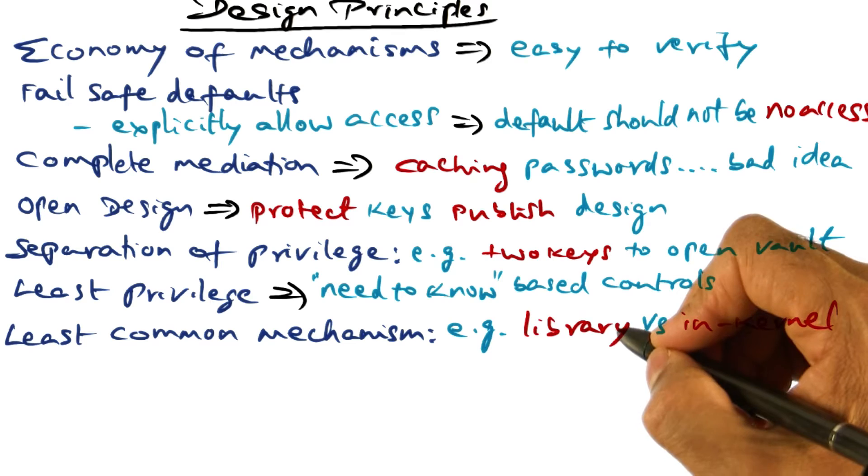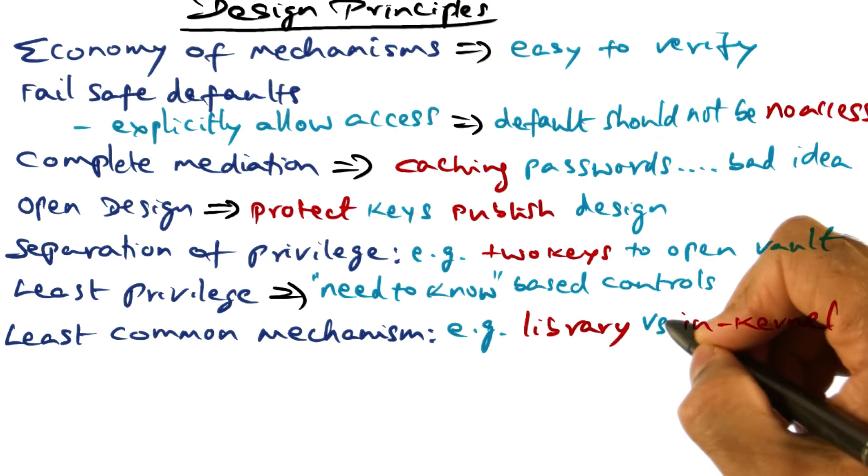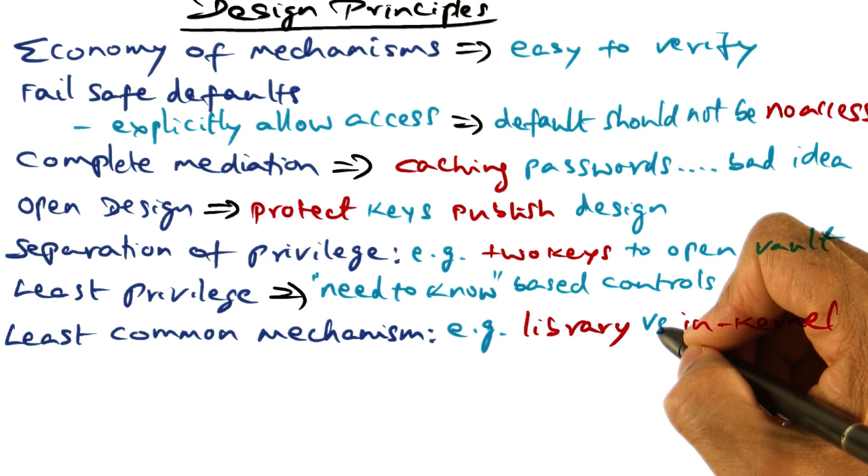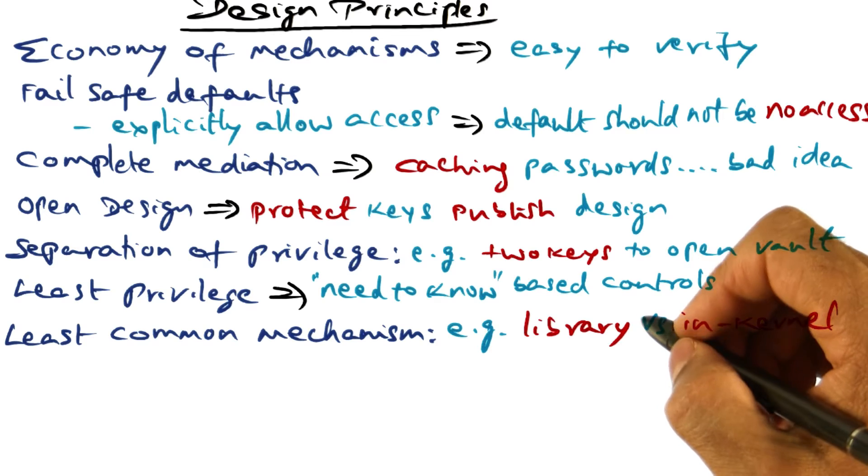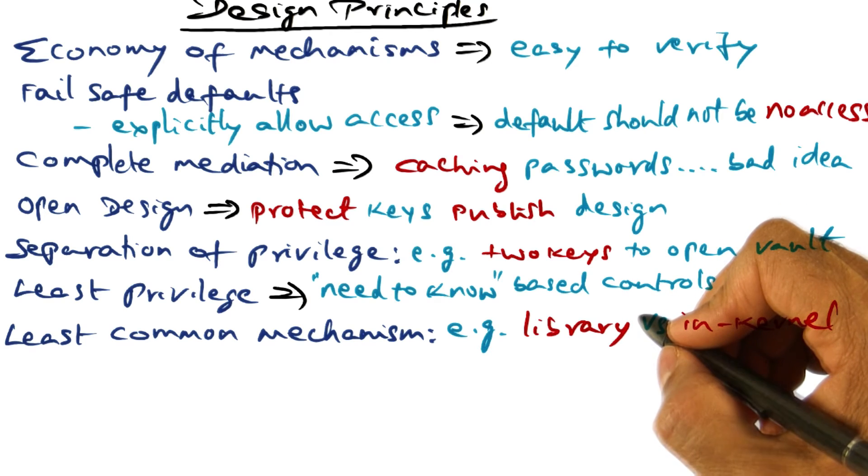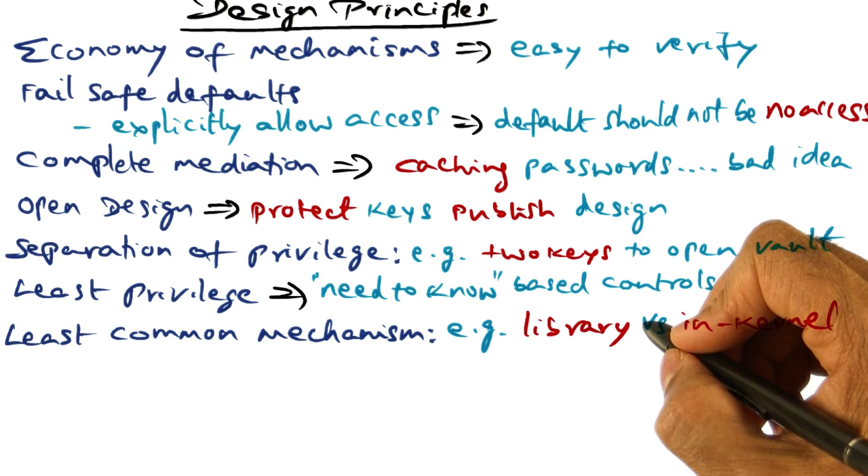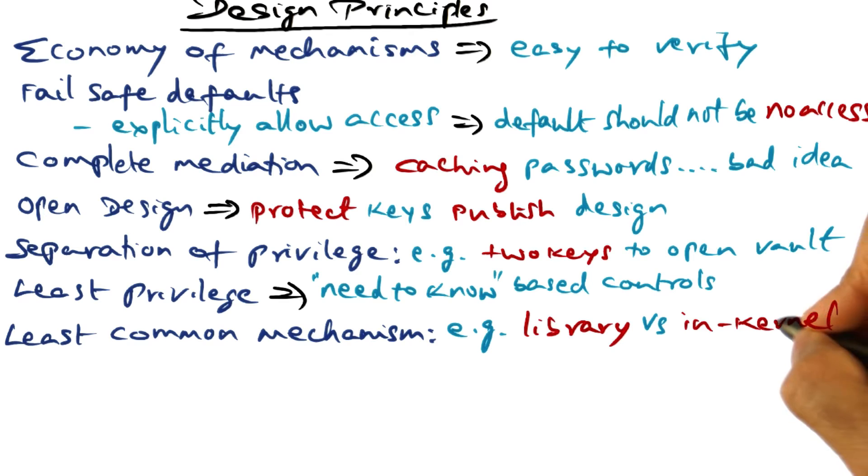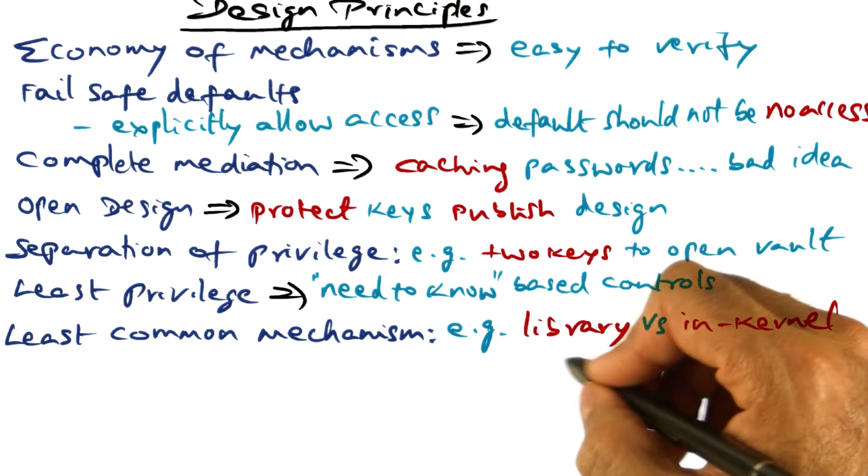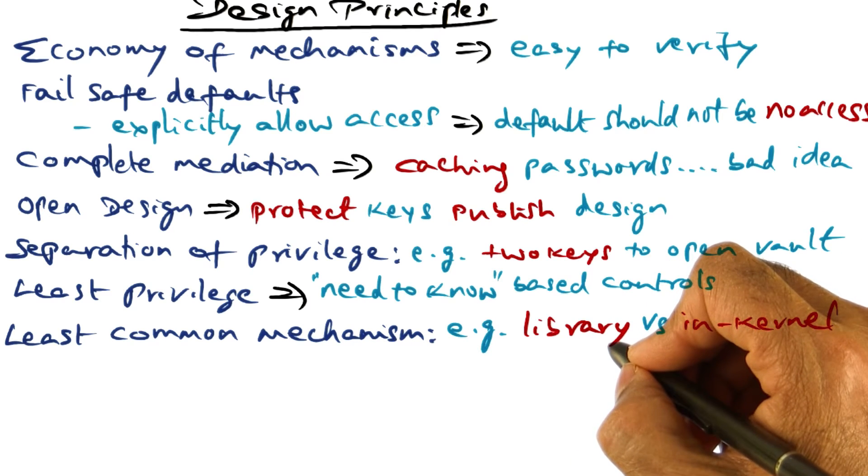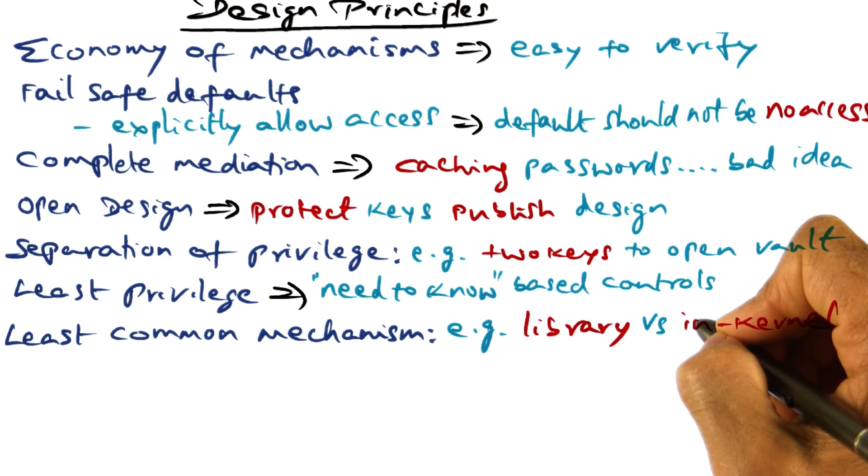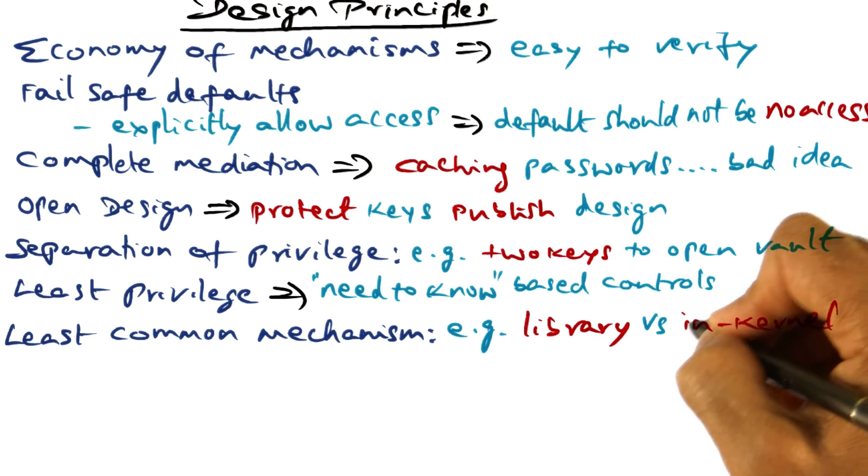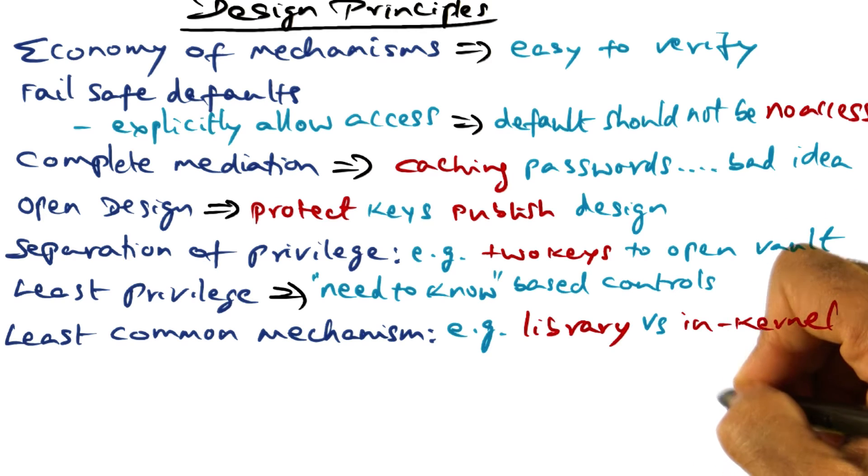Another principle is least common mechanism. In other words, if there is a mechanism that the system wants to implement to assure information security, at what level should that mechanism be implemented? Should it be in the kernel, or should it be available as a library outside the kernel? Because there are implications when something is inside the kernel—it has access to information that is also inside the kernel. Whereas if it is a library sitting on top of the kernel...